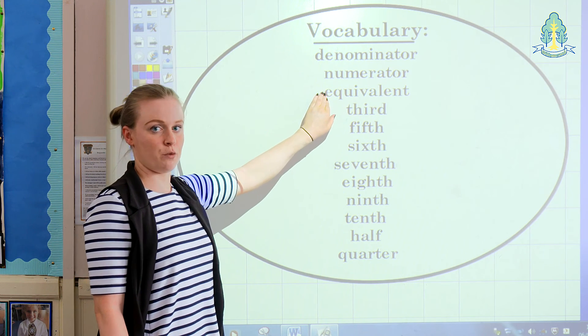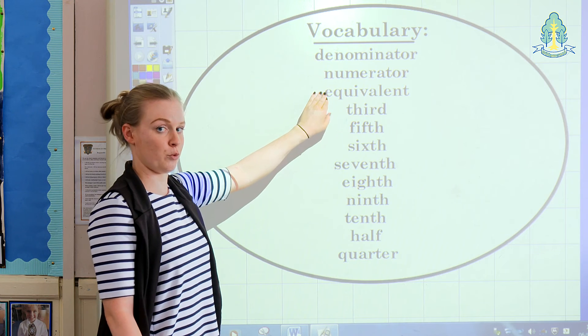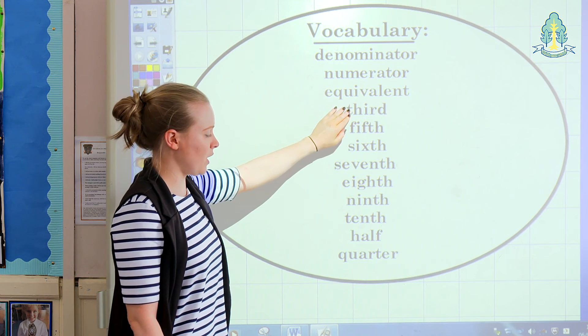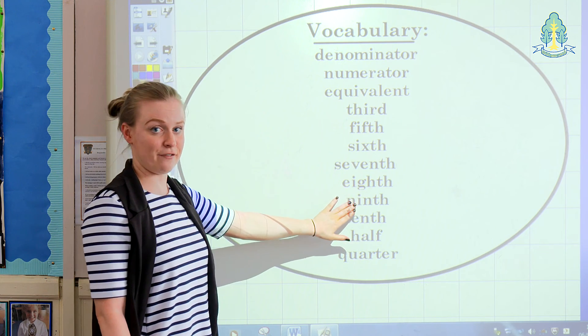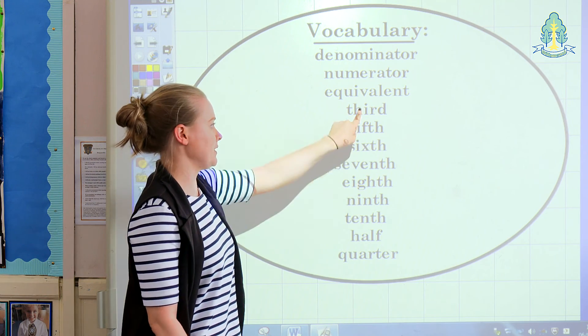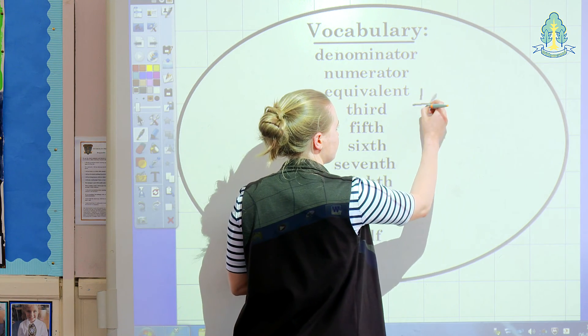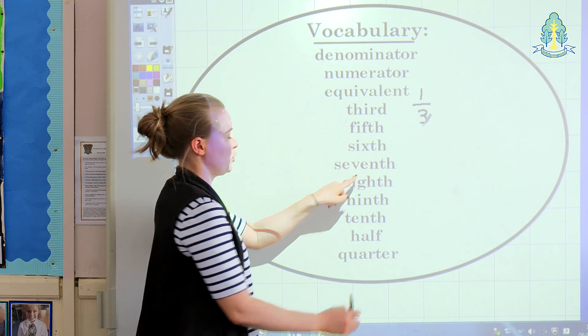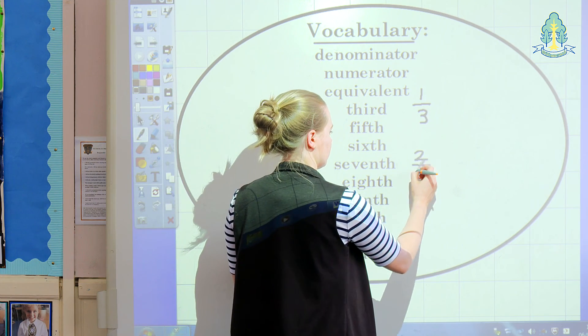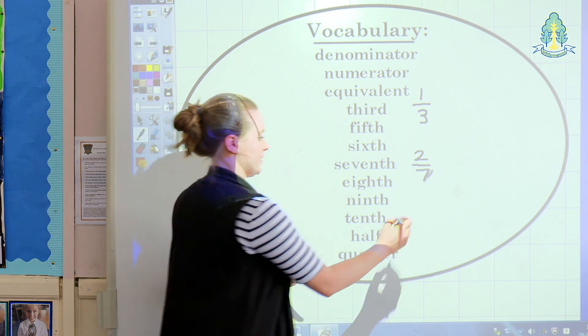Equivalent, which is the word for two equal fractions, like a half and two quarters. And the next words are the ways that we say fractions out loud. For example, one third, two sevenths, three ninths.